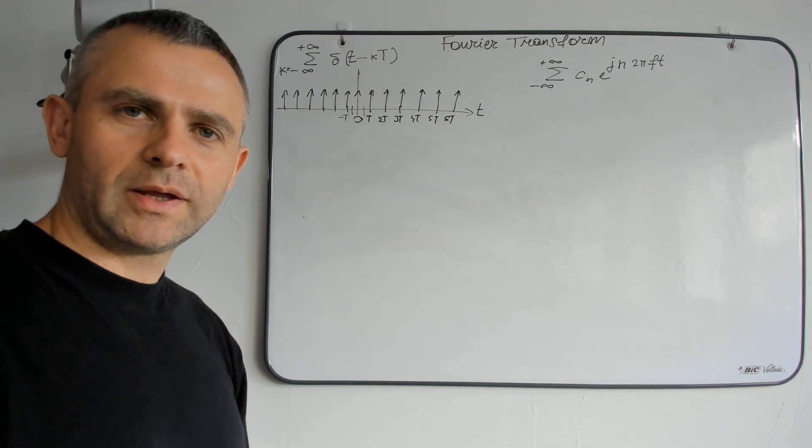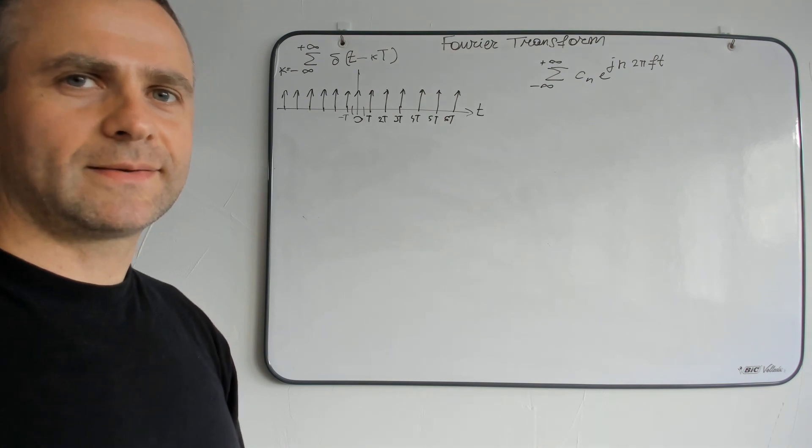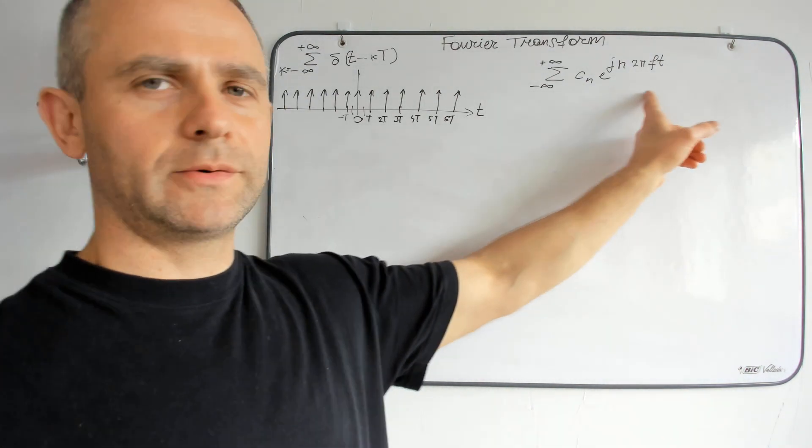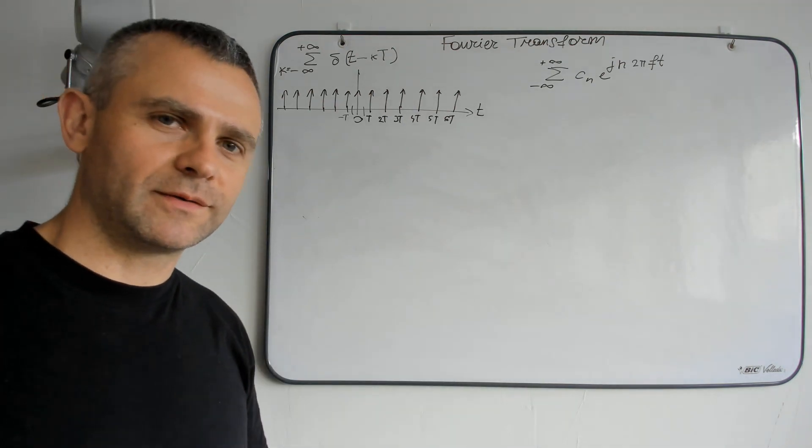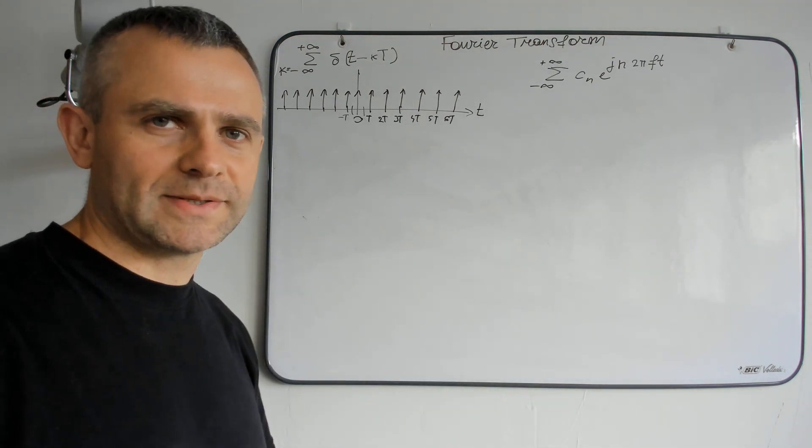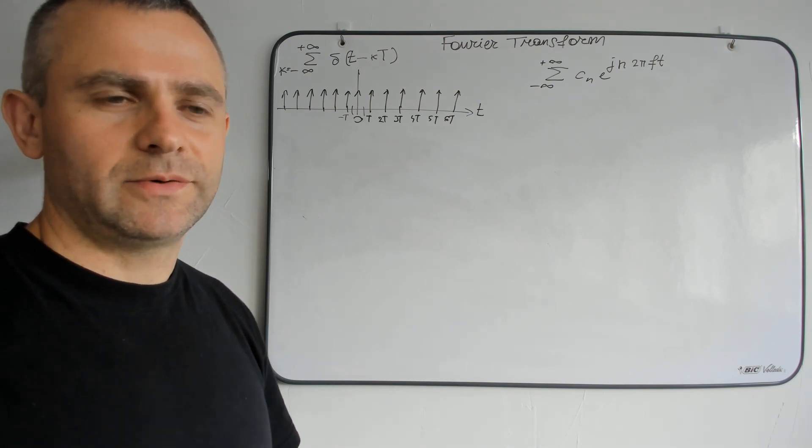Well, what we must know about Dirac comb is that it's a periodical function, which means if it's a periodical function, it can be represented as a Fourier series.